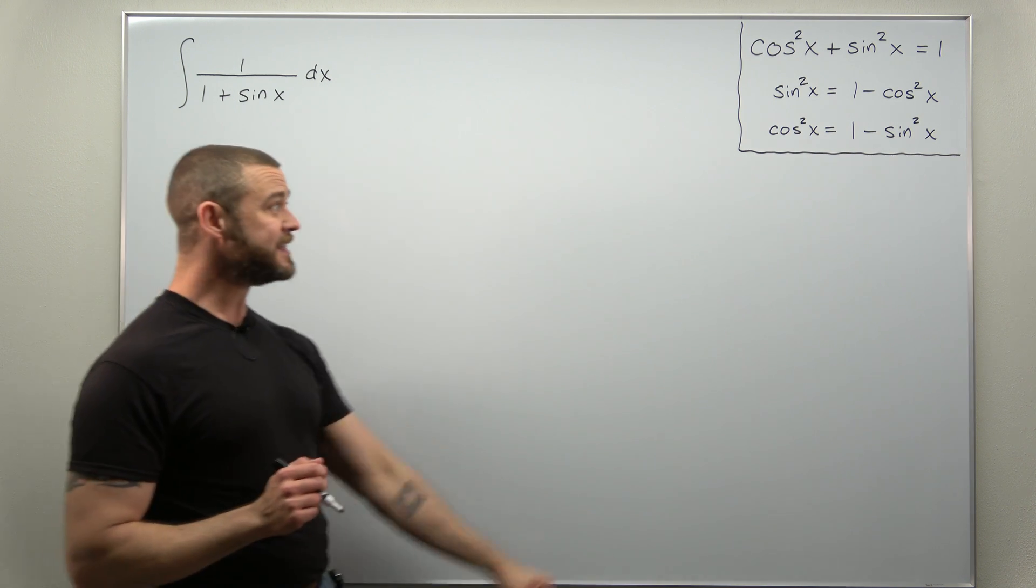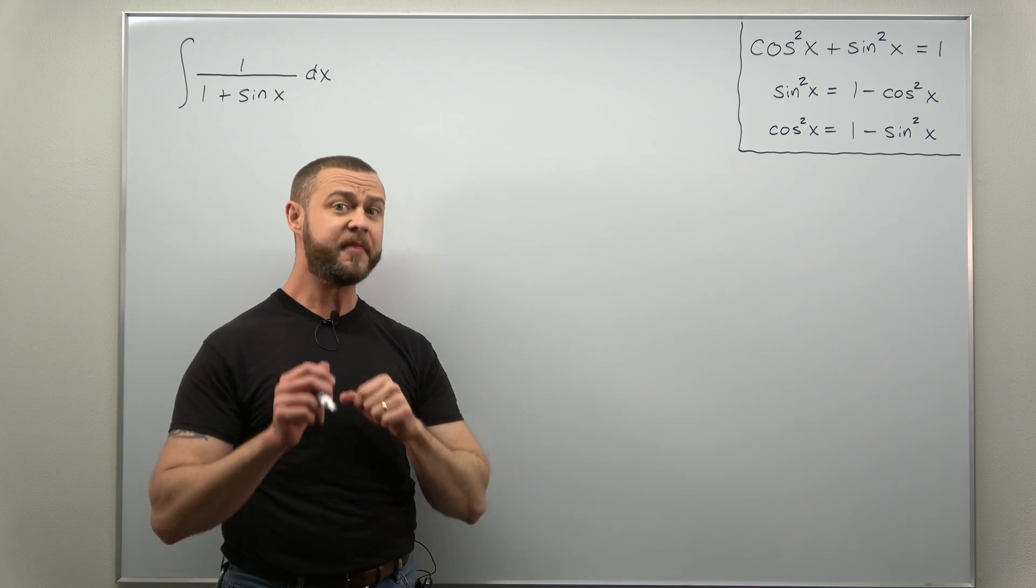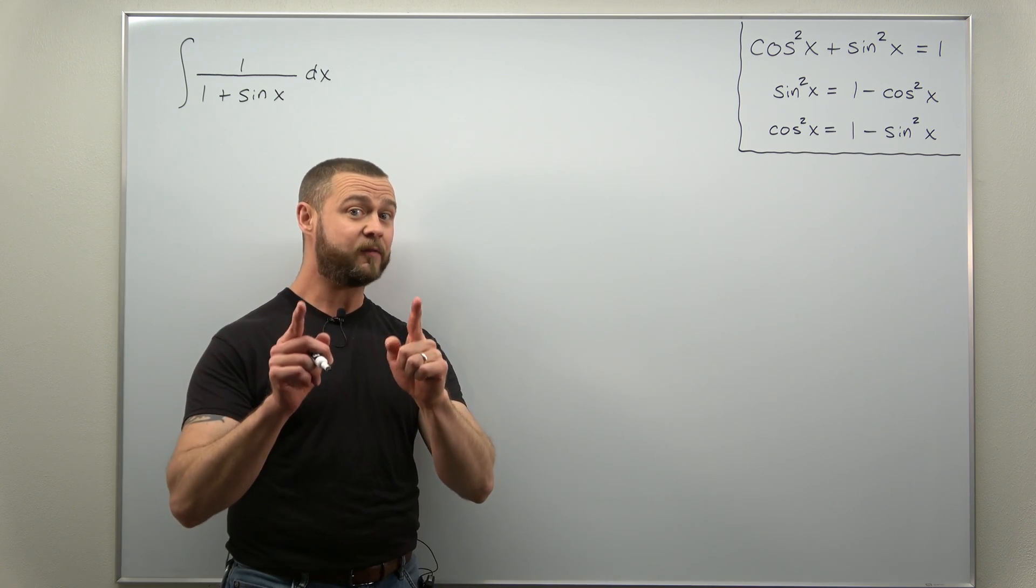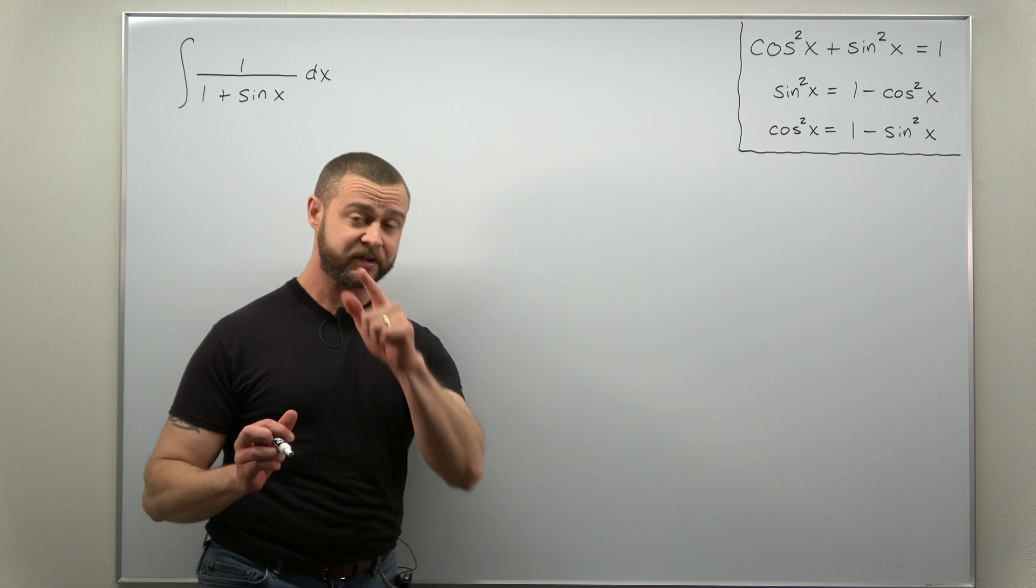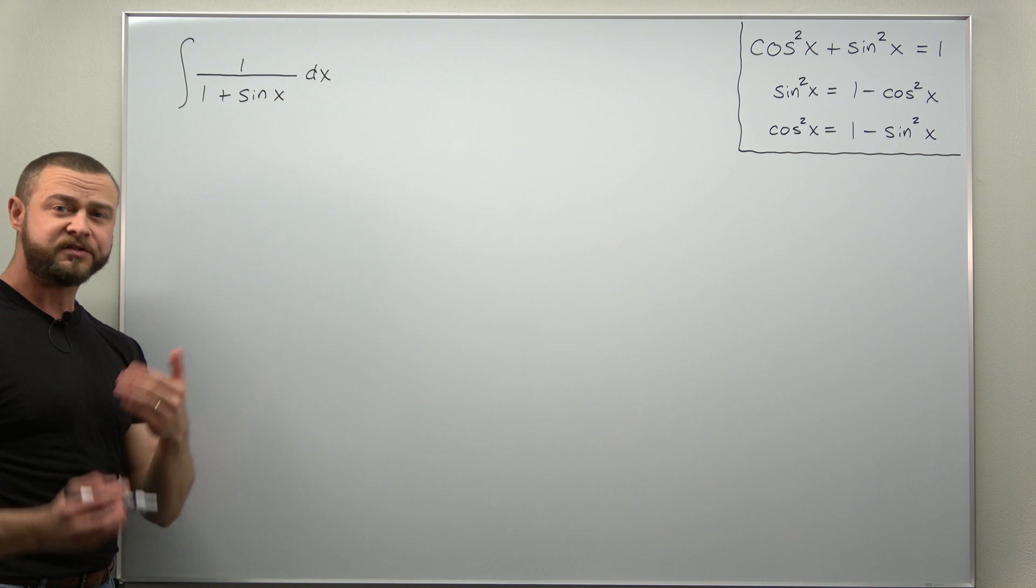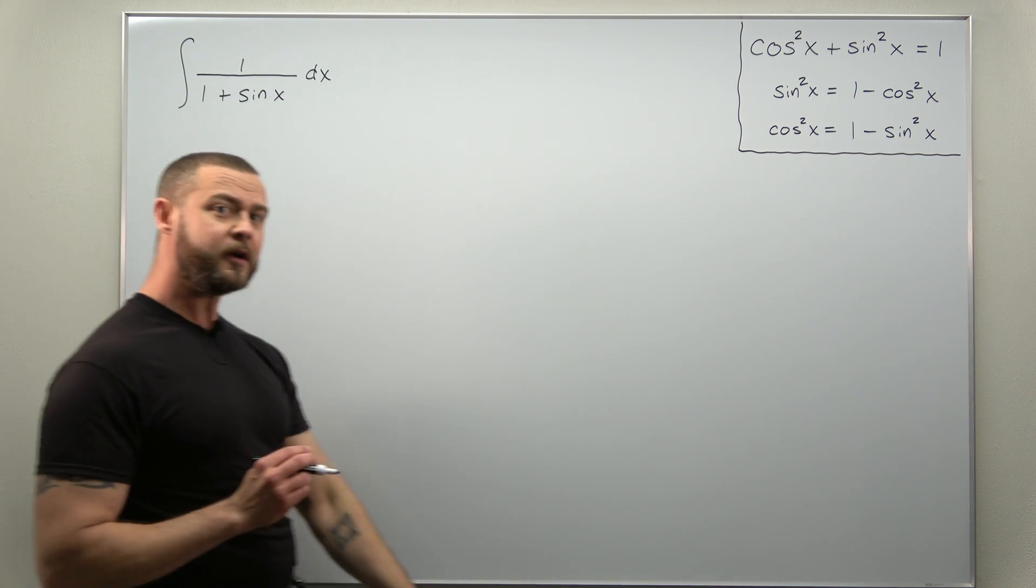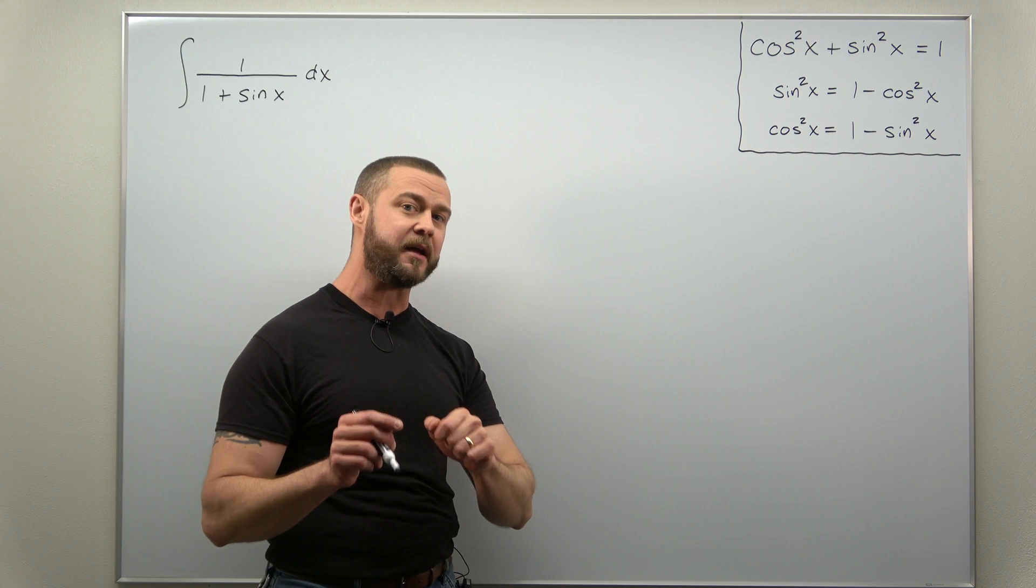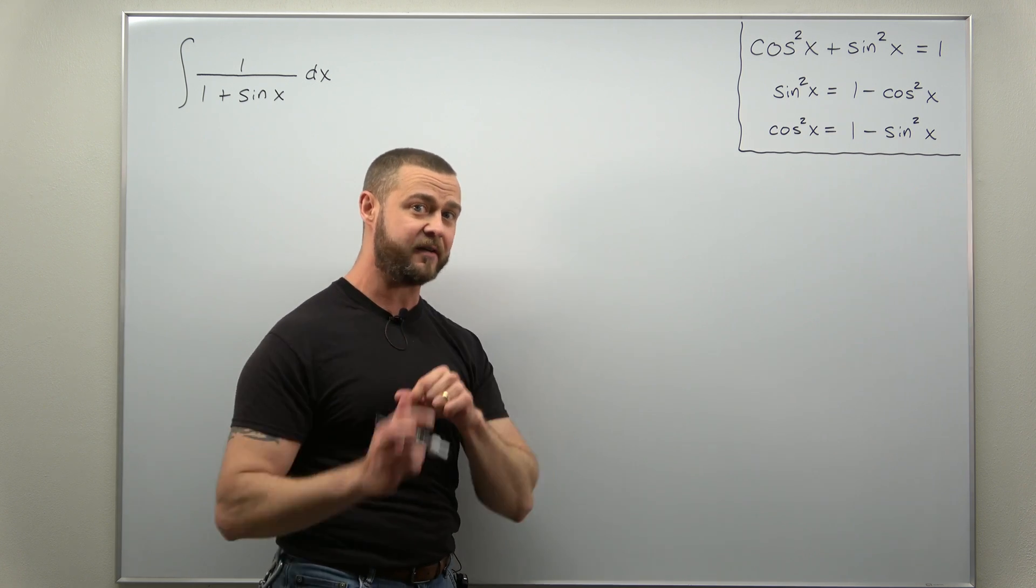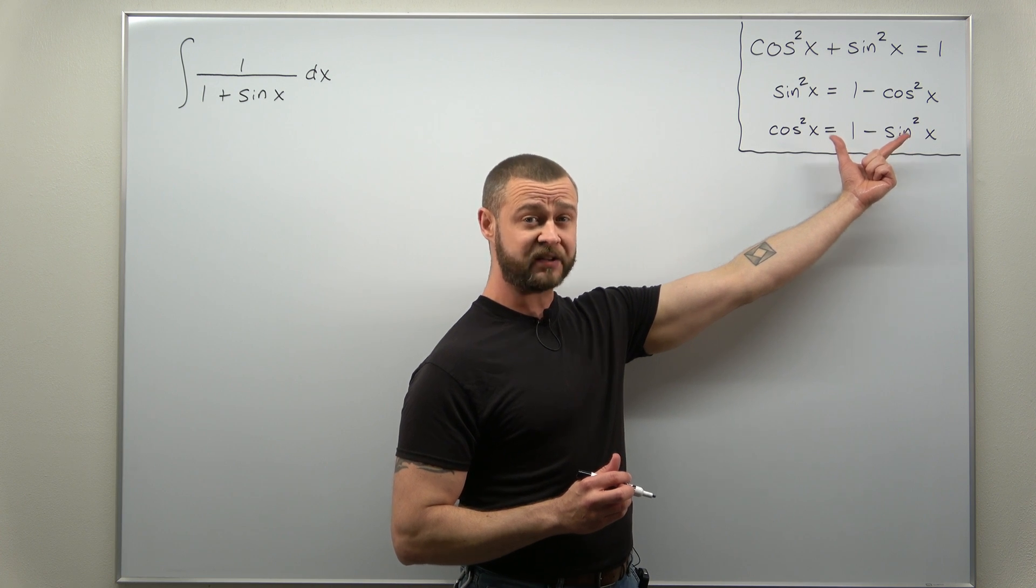The most important trig identities of all are the Pythagorean identities. Now the Pythagorean identities involve squared trig functions but our integral just contains sine of x not sine squared. So how would we make use of the Pythagorean identities here? Well what we're going to notice is that our denominator 1 plus sine of x, that's a factor of 1 minus sine squared of x.